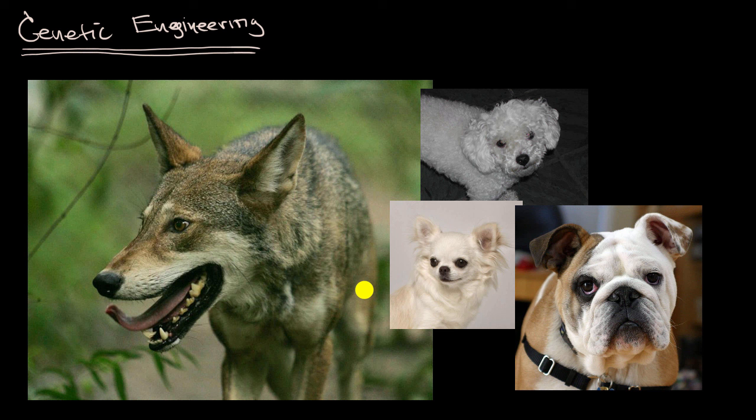Or traits that they are more docile, they're more likely to listen to what a human being says to do. Or traits that they're good at killing rodents, or whatever else it might be. And over time, repeated selection of those traits led to what we see as these different breeds of dogs.